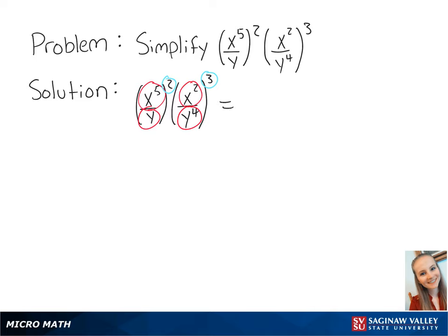This expression is going to equal x to the 5 times 2 over y to the 1 times 2. This is being multiplied by x to the 2 times 3 over y to the 4 times 3.